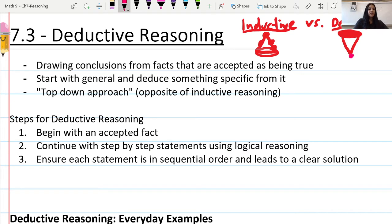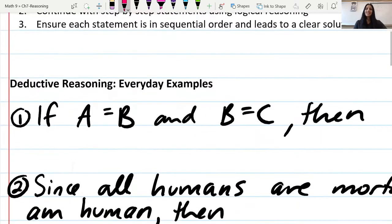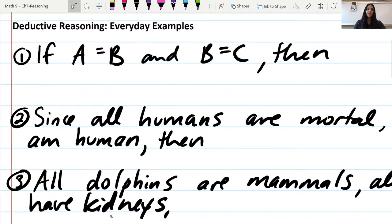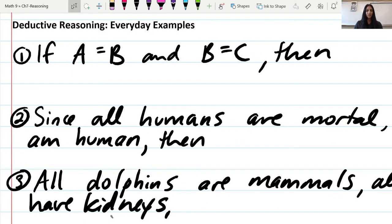Here are steps for deductive reasoning: Begin with an accepted fact, continue with step-by-step statements using logical reasoning, and ensure each statement is in sequential order and leads to a clear solution. Let's dive into examples so you can see what we're talking about.